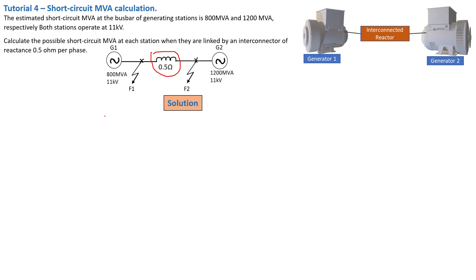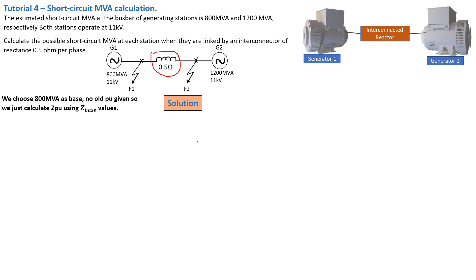When we do per unit system, we change from one base to another. The previous values were designed for another system, so when we do a per unit calculation, we change to a different base. Given that the base MVA is not provided, it's up to us what base value we want to use. The base value we choose doesn't matter as long as we don't make mistakes along the way. We choose a base MVA of 800 MVA.